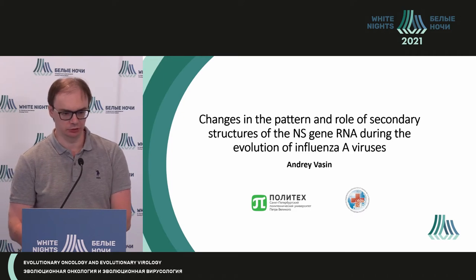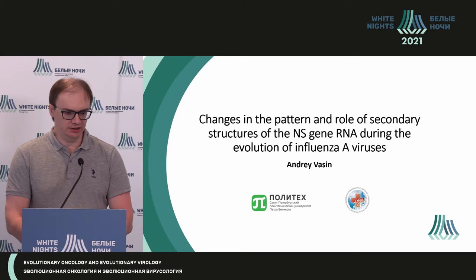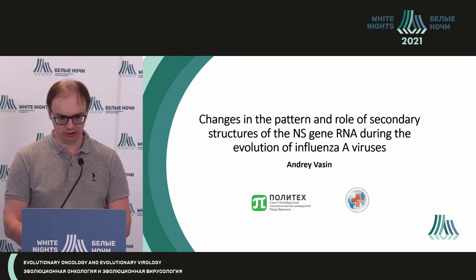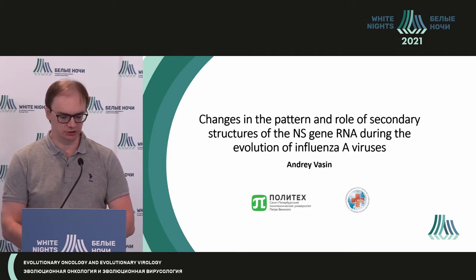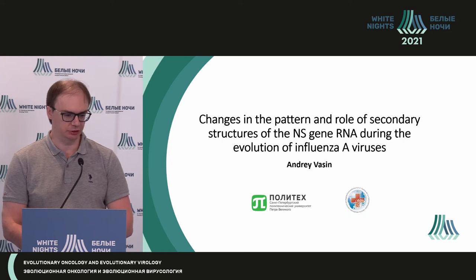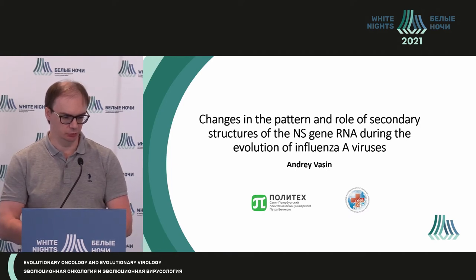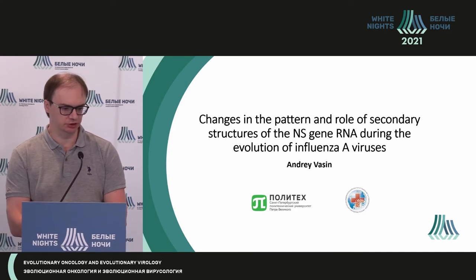When we talk about evolution and adaptation, first of all we mean some amino acid substitutions which we can see in viral proteins. Those substitutions, on one hand, determine adaptation when transferred from one host to another. In case of the flu virus, it's transmission from avian viruses or from porcine viruses to humans on one hand. On the other hand, during evolution into the human populations, there are also permanent mutations and replacements which result in the immune system getting used to the virus.